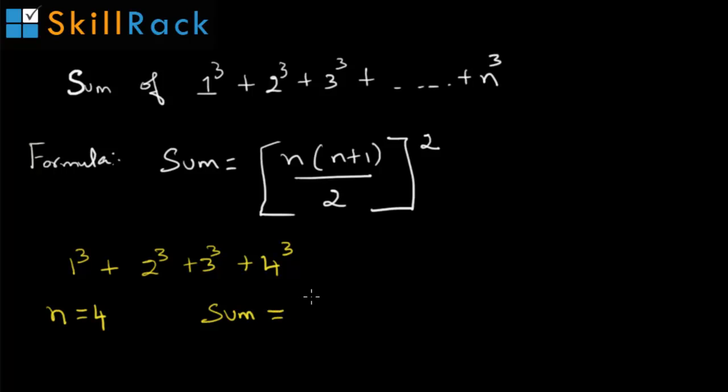Sum is equal to 4 into n plus 1, which is 4 plus 1. So 4 into 5 by 2, the whole square, which is 10 squared and the sum is equal to 100.